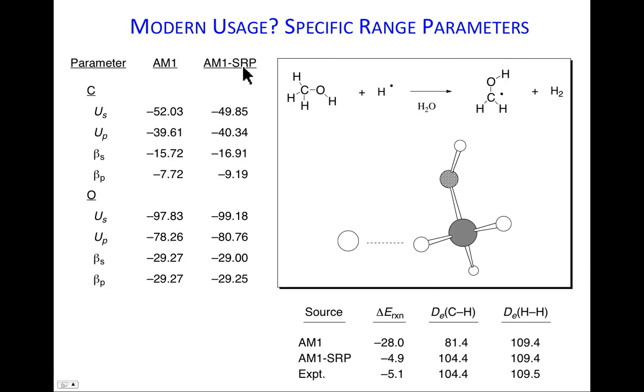What one does in an SRP model is looking at these kinds of critical data. How can I tweak these parameters in order to improve against experiment and have a model that's specifically appropriate for this reaction? These are the SRP parameters that were developed. You note that there's very little change in the beta parameters for oxygen, a little more change in the beta parameters for carbon, very little change in these parameters for oxygen, but a relatively substantial change in the US parameter on carbon. That serves in this SRP model to make the CH bond strength greater, that's what was needed to agree better with experiment, and now the thermochemistry is about right. Here's a model that you can now use and consider to be far more trustworthy to study the dynamics of this process.